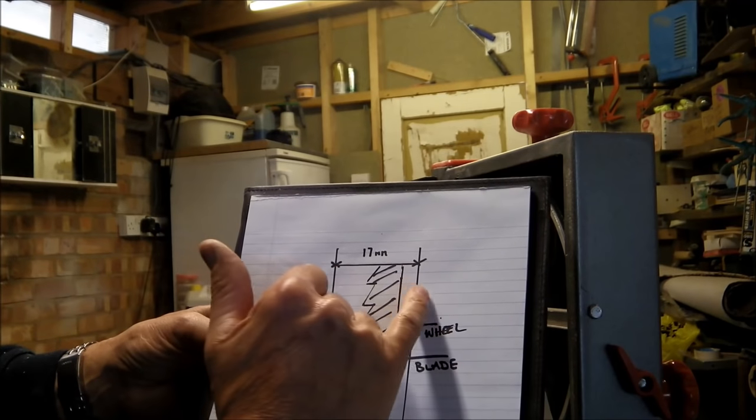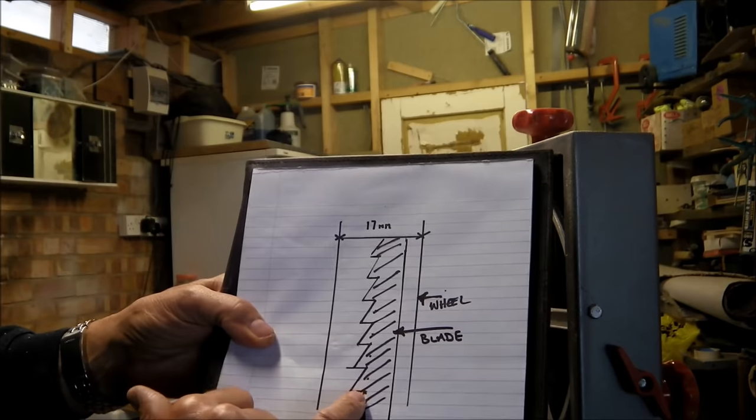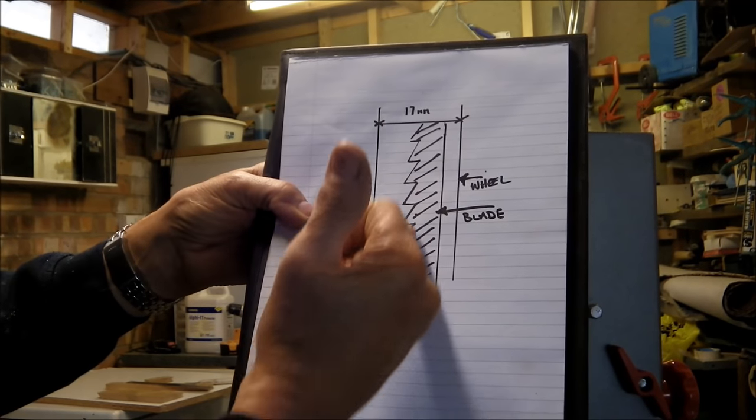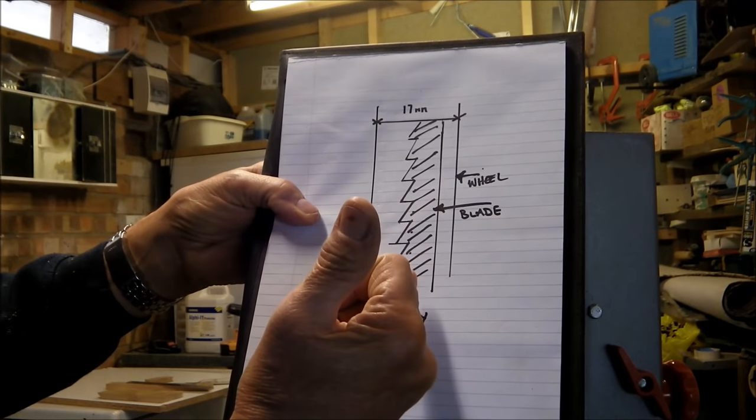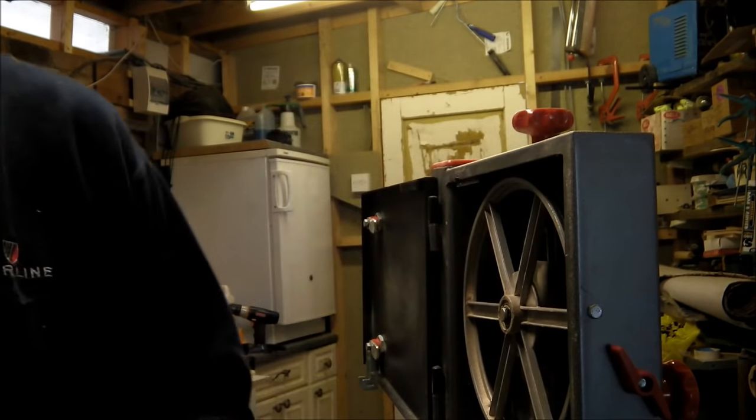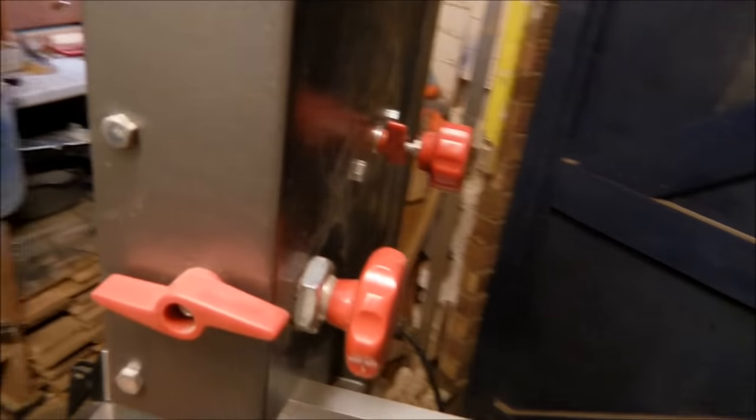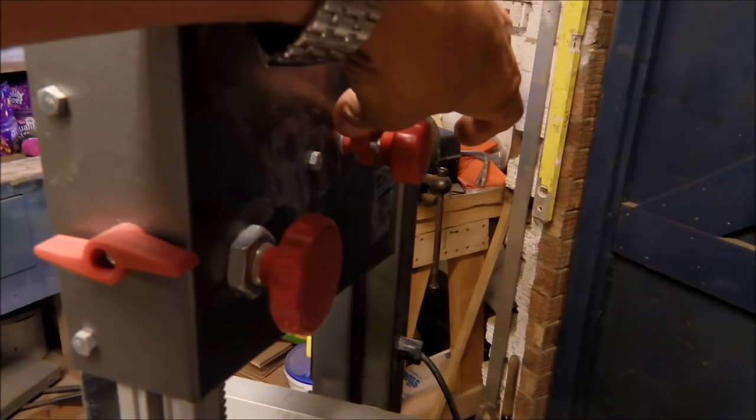My wheel is 17mm wide, so the middle of the teeth, the back path of the teeth there wants to run midway through that wheel and that's your starting point. Once you've set that up there by using the adjuster on the back, lock it in place.